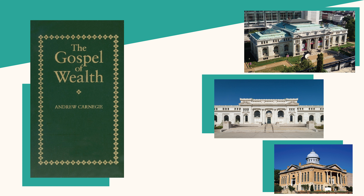Carnegie, like Rockefeller, was also known for his philanthropic work. In 1901, he sold his steel company to J.P. Morgan for $480 million and devoted the rest of his life to giving away his fortune. He founded the Carnegie Corporation, which supported scientific research, education, and the arts. His contributions to early America helped shape the nation's cultural and educational landscape. Through his philanthropy, Carnegie gave away more than $350 million to charitable causes, including the founding of Carnegie Mellon University and the Carnegie Foundation for the Advancement of Teaching.